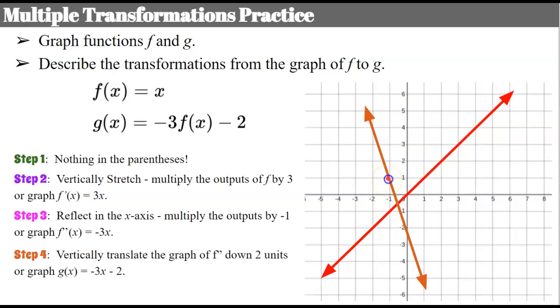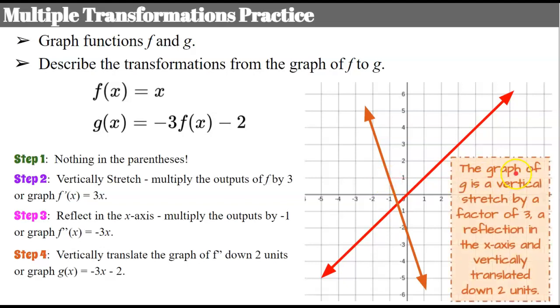Now let's describe the transformation. The graph of g is a vertical stretch by a factor of three, a reflection in the x-axis, and it's vertically translated down two units.